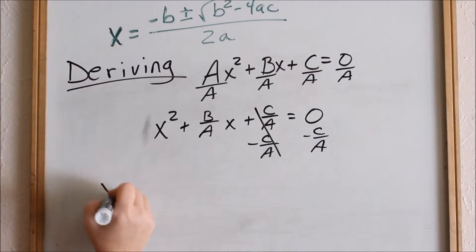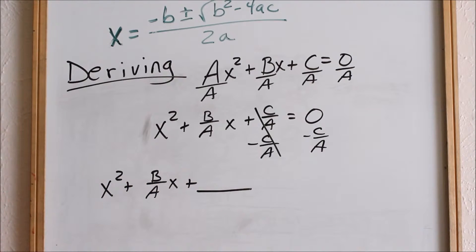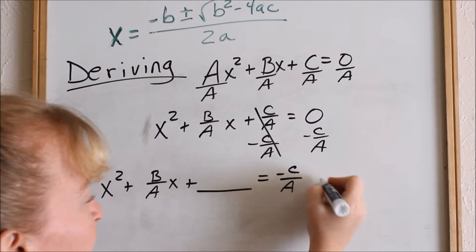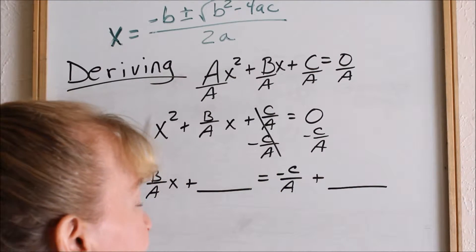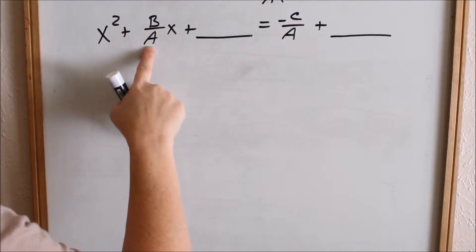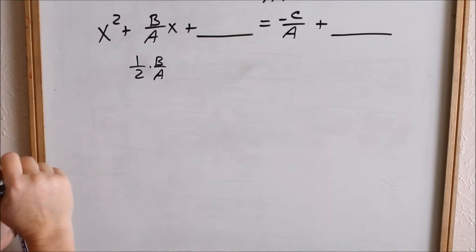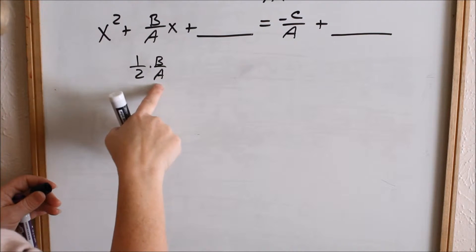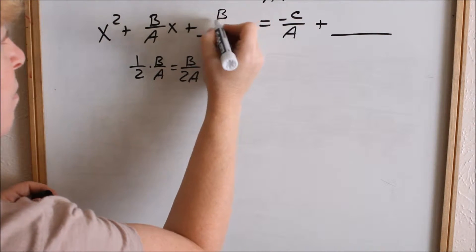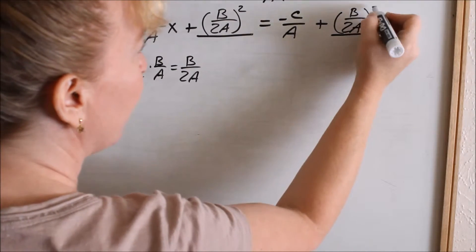So that goes away. Now I have x squared plus b over a times x plus a blank to complete the square, and on the right, 0 minus c over a is negative c over a. Whatever I add to this side, I have to add to the right-hand side as well. How did I fill in this blank? I took half of b over a and then squared it. One half of b over a is b over 2a, and then I need to square it — so b over 2a squared. And then I have to add b over 2a squared to the right-hand side as well.